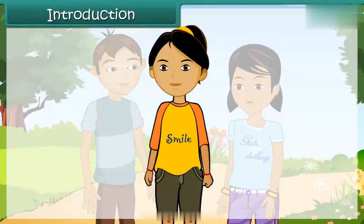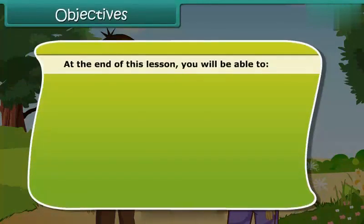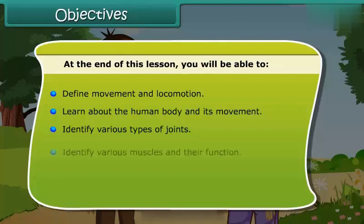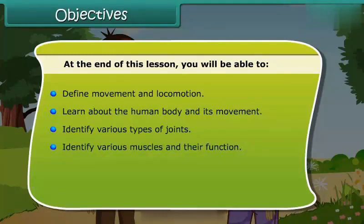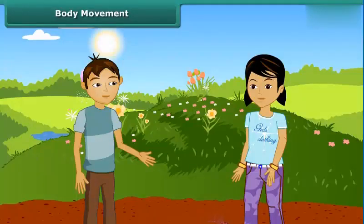Children, in this lesson we will learn about body movement and the difference between movement and locomotion. At the end of this lesson you will be able to: define movement and locomotion, learn about the human body and its movement, identify various types of joints, identify various muscles and their functions, and identify movements in various animals, including the streamlined body.